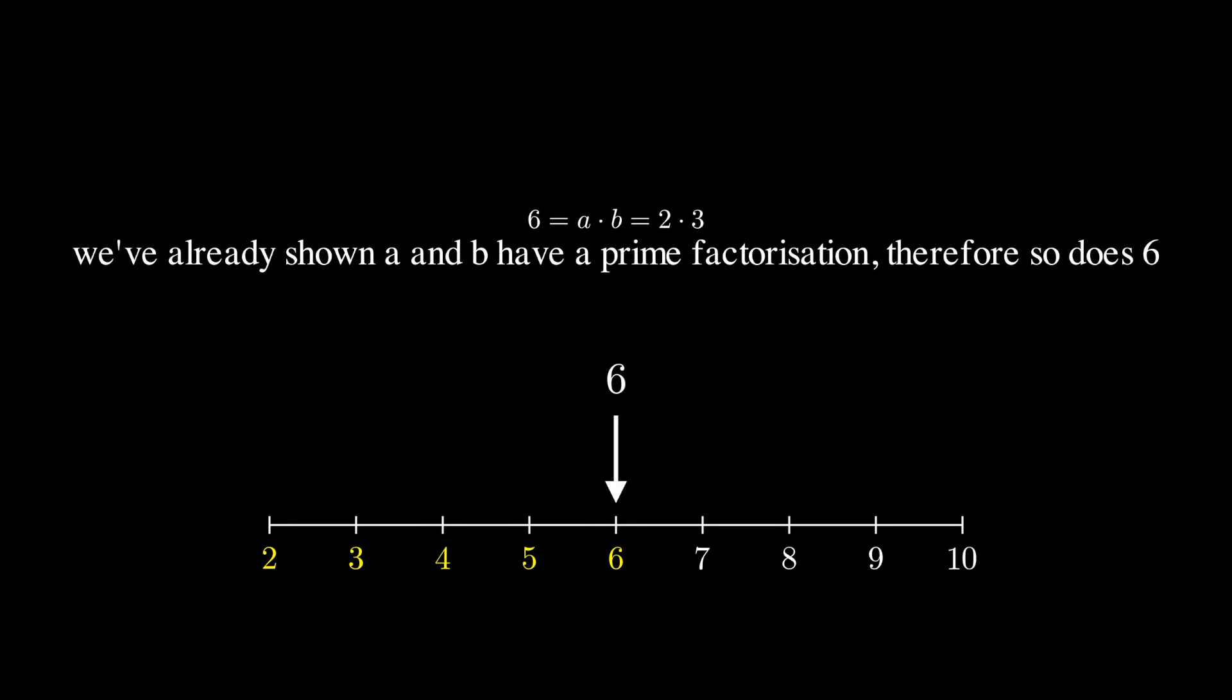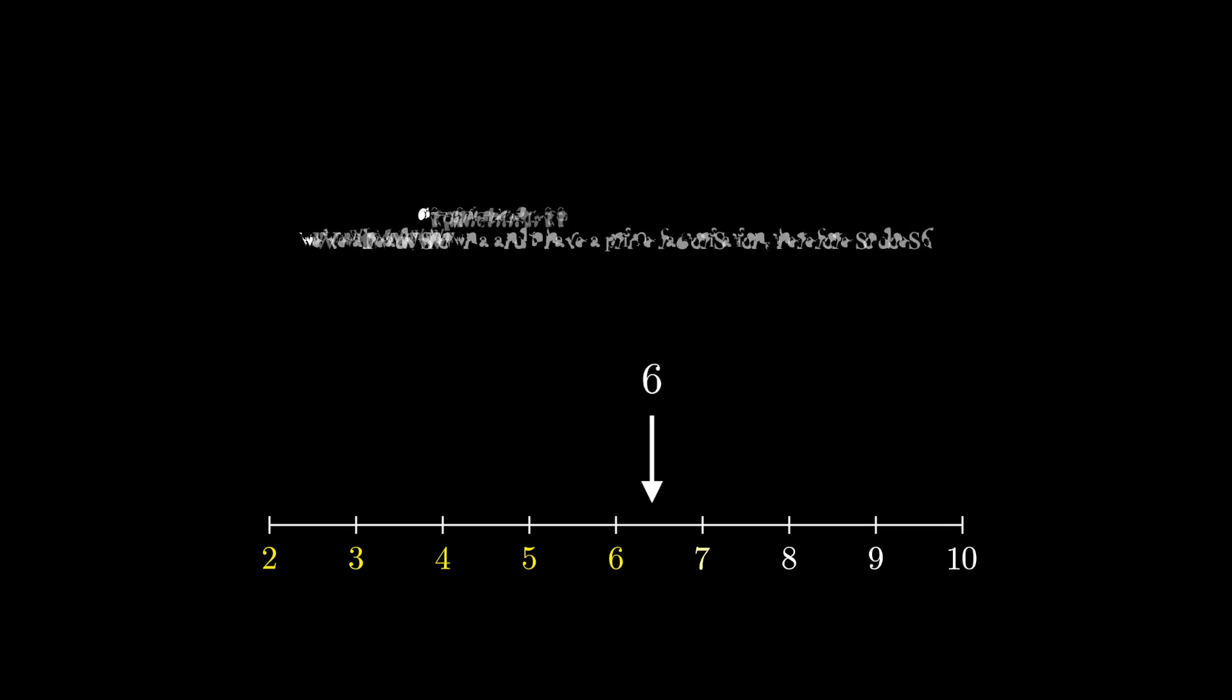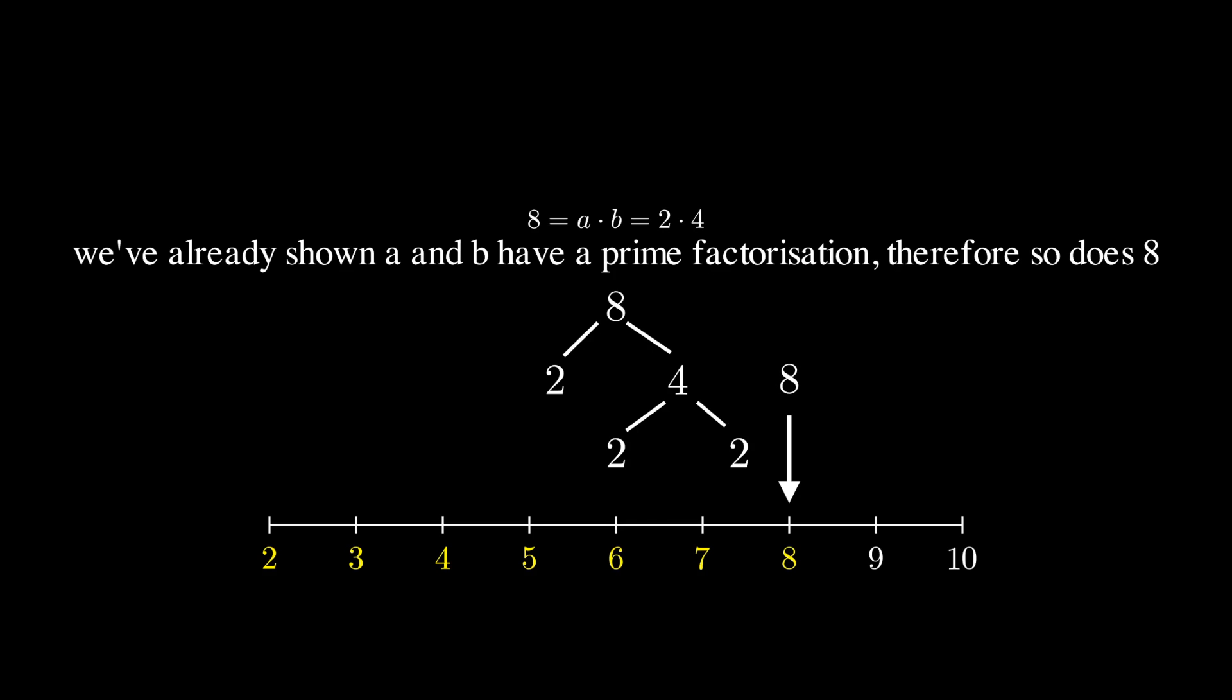6 is made up of 2 and 3, both of which we've already shown have prime factors, therefore so does 6 as the next level of our tower. 7 is easy because it's also prime. 8 is made up of 4 and 2, and as 4 and 2 both have prime factors, so does 8.